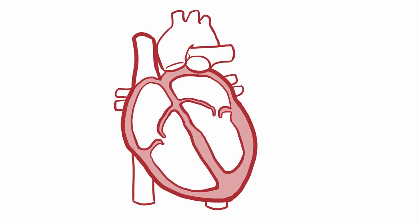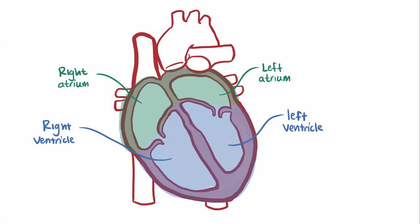If you look at the heart, you've got the right and left atrium up top, and the right and left ventricles down low. Each of these pairs is separated by a wall called a septum.